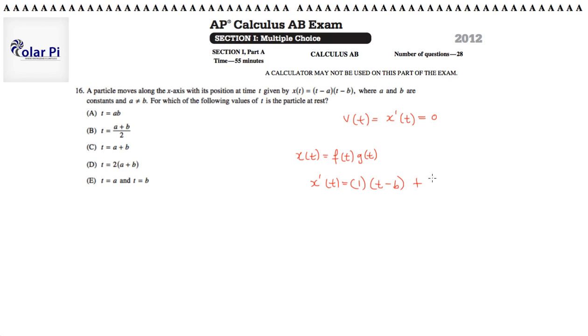plus f of t, which is t minus a, times the derivative of g of t. Since g of t is t minus b, its derivative is one. And so this is kind of a weird way to do this, but it's cool. t minus b plus t minus a.